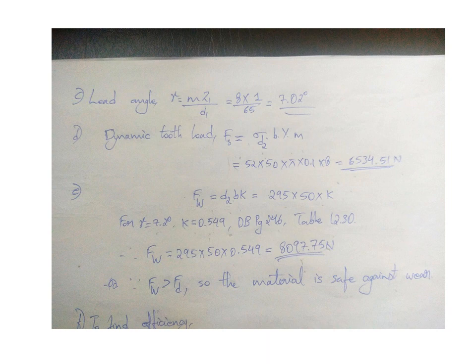Finding the lead angle gamma equals m times z1 by d1, which is 7.02 degree. Dynamic load Fd equals sigma d2 times b times y times m. All values are known by us.